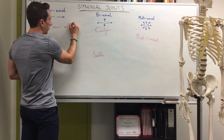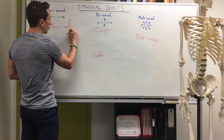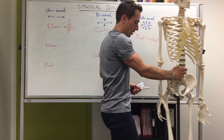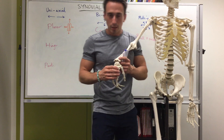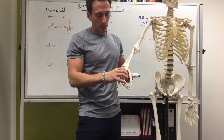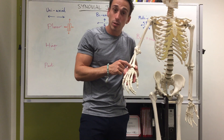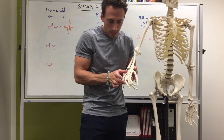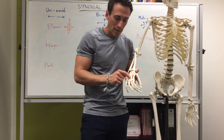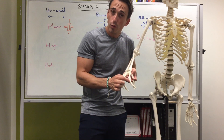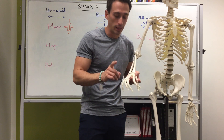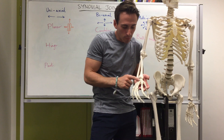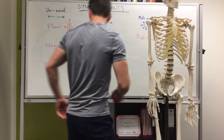A planar joint is basically like two flat pieces of material coming together, moving either up and down or forward and back. Where can we find a planar synovial joint? With Frank's help — in the hand. The hand has carpals, metacarpals, and phalanges: proximal phalanx, middle phalanx, distal phalanx. Planar joints are found at the carpals in what we call the intercarpal joint — between the carpals.